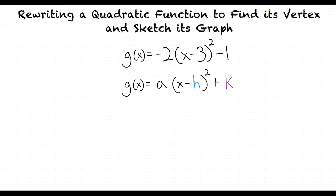we can now find the vertex by finding the constants that correspond to our h and k. In the case of this quadratic function, h equals 3 and k equals negative 1. This means that our vertex is 3, negative 1.